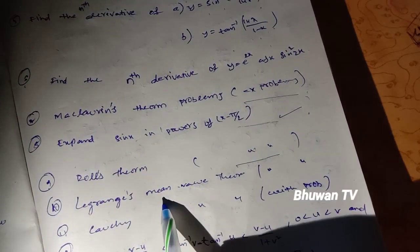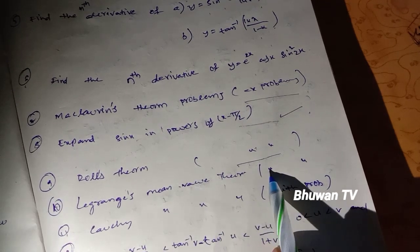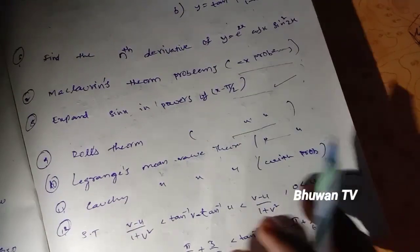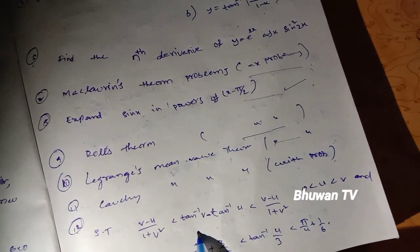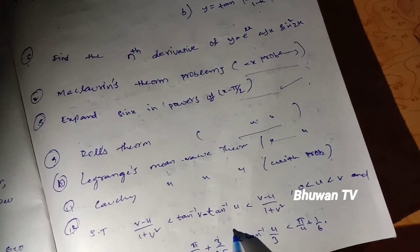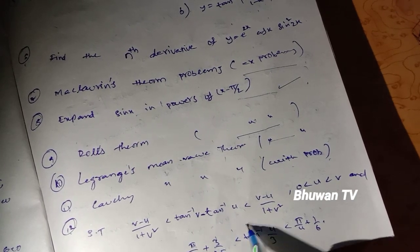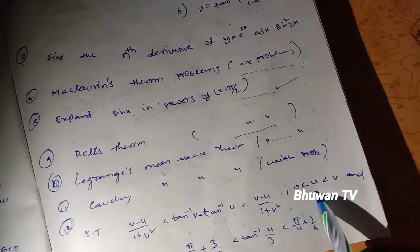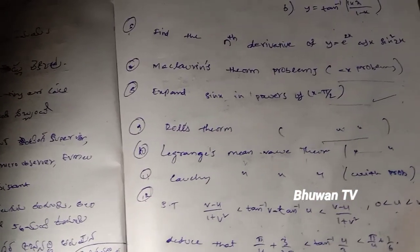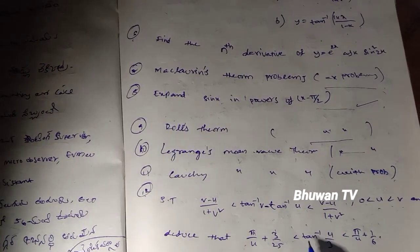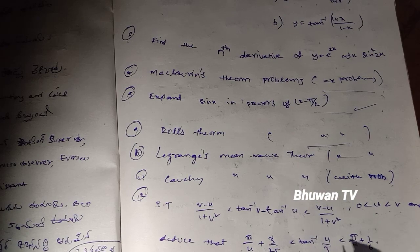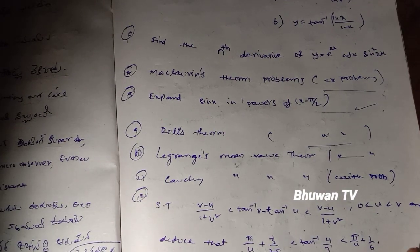Next, show that (v minus u) / (1 plus v²) is less than tan⁻¹(v) minus tan⁻¹(u) is less than (v minus u) / (1 plus u²) where 0 < u < v. Also deduce that π/4 plus 3/25 is less than tan⁻¹(4/3) is less than π/4 plus 1/6.